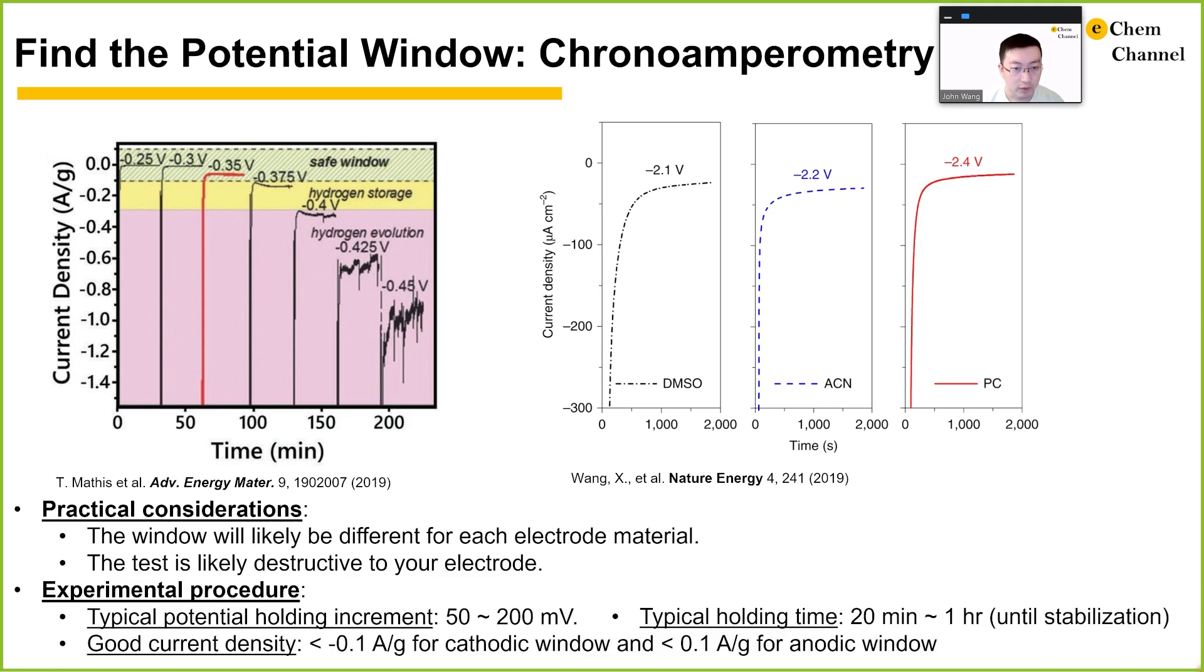When it comes to experimental procedure, you may start from open-circuit potential and pick 50 to 200 mV as your potential increment. The criteria for holding duration is the stabilization of leakage current, but 20 minutes to 1 hour is typically used. A good cutoff current density is -0.1 amps per gram for the cathodic range and positive 0.1 amp per gram for the anodic range. An example is shown on the right,